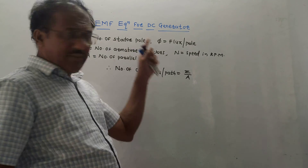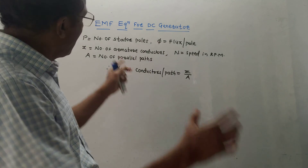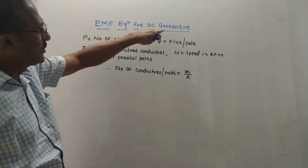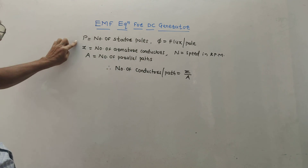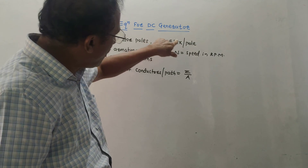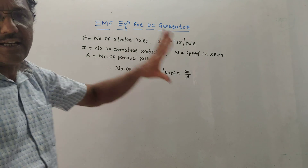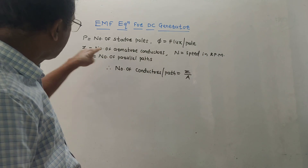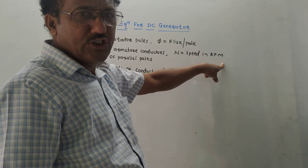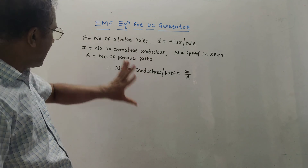The next important part is the derivation of EMF equation for DC generator. These derivations are very simple. Remember the notations: P represents number of stator poles; φ represents flux per pole; Z represents number of armature conductors; N is the speed measured in RPM (revolutions per minute); and capital A represents the number of parallel paths used in the conductor.